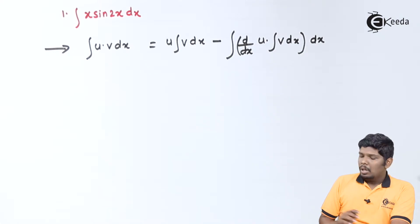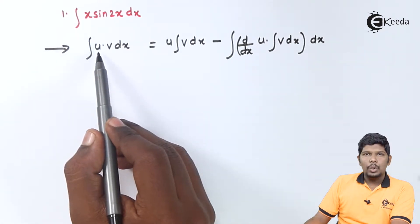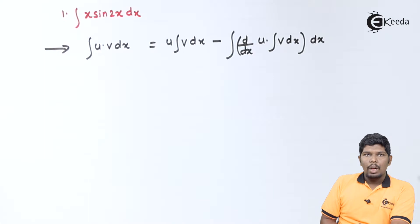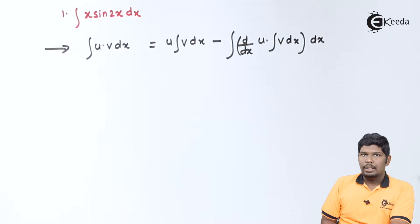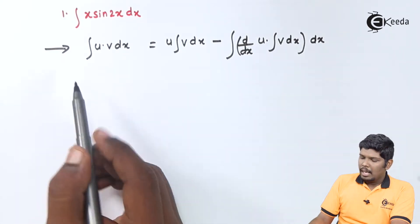Now how to decide which function is u and which function is v? For that we need to understand different types of functions, and those different types of functions can be memorized by memorizing just one word — that is LIATE.